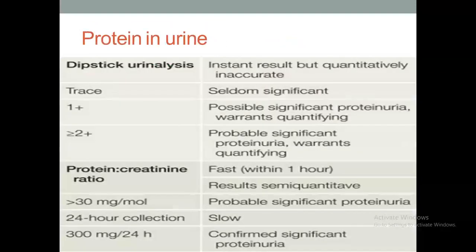Regarding proteinuria measurement: dipstick urinalysis is qualitative only, showing 1+ or 2+. Quantitative measurement requires 24-hour urine collection for protein-creatinine ratio. If 300 mg or more of protein is found over 24 hours, this confirms significant proteinuria.